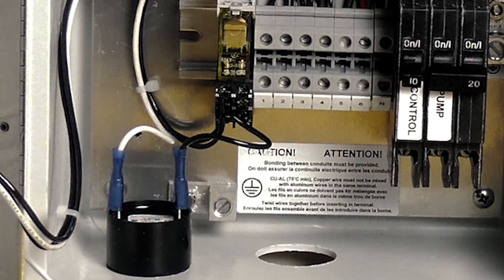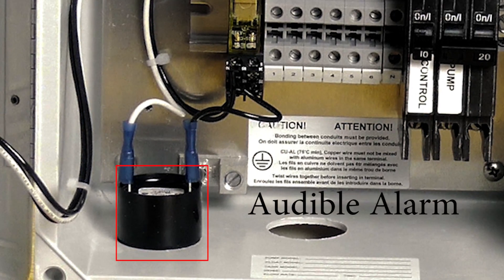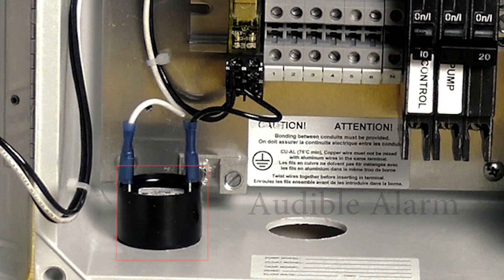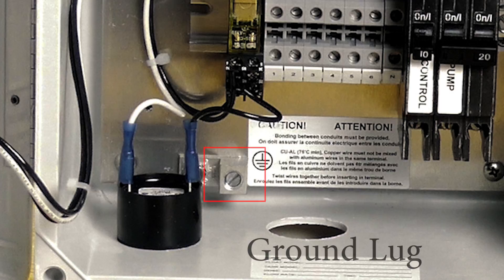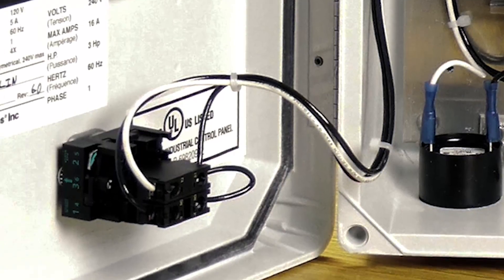Down here, we have our audible alarm. This is just a little alarm speaker. And then we've got the ground lug in the back here, and that's well labeled.